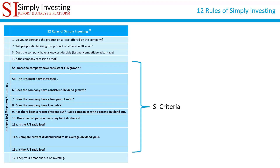I refer to these quantitative rules as the Simply Investing criteria. As you can see, there are 10 SI criteria on the screen. If a company passes all of the criteria it will get a maximum grade of 10 out of 10. If a company fails one criteria it will get a grade of 9 out of 10. The Simply Investing platform will automatically calculate the SI criteria for all US and Canadian common stocks daily, and you will be able to see the SI criteria grade for each common stock.